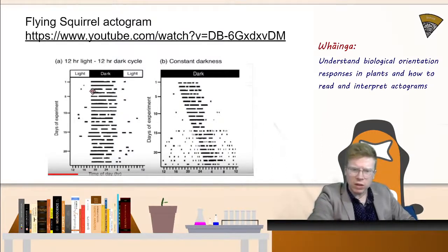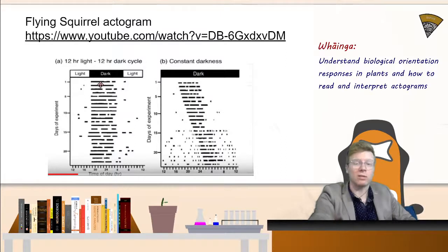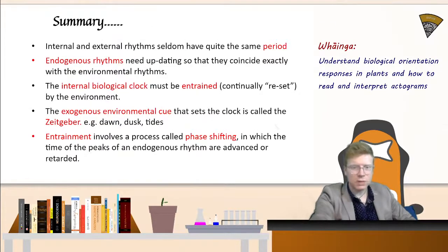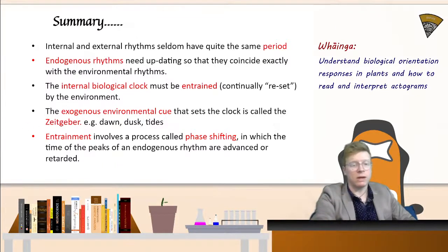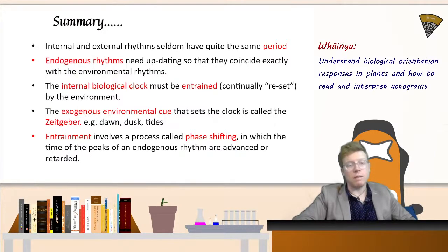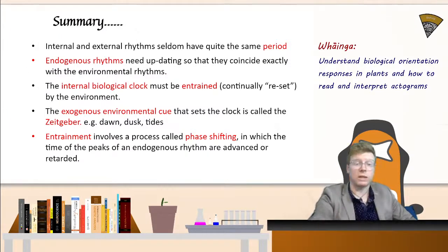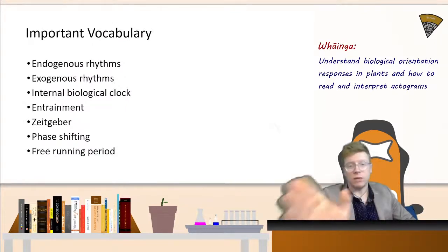Squirrels are most active when it is dark outside, indicating they are nocturnal. Placing them in constant darkness shows free-running again, eventually becoming out of phase with the normal cycle. In summary: the internal rhythm (endogenous) and external rhythm (exogenous Zeitgeber) work together. The Zeitgeber doesn't have to be the sun — for different organisms it could be tides, food, or temperature. Scientists investigate what those Zeitgebers are. Make sure you know all these key vocabulary terms.